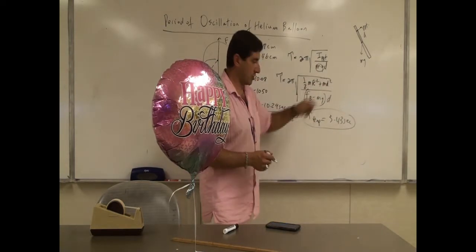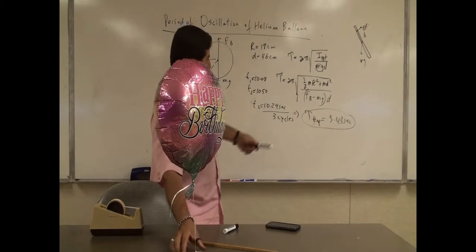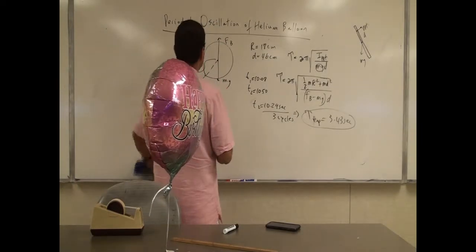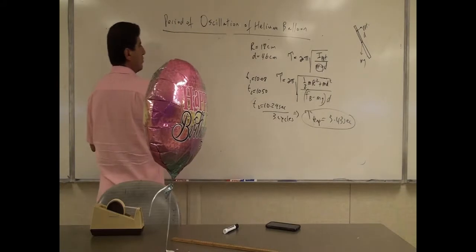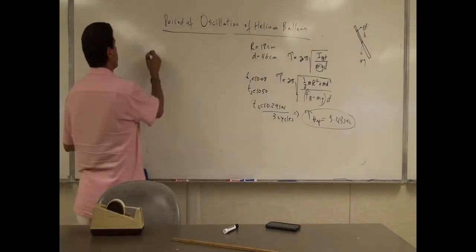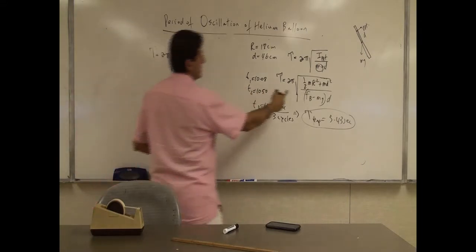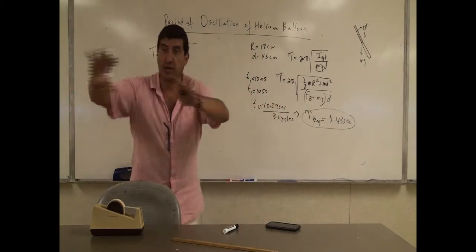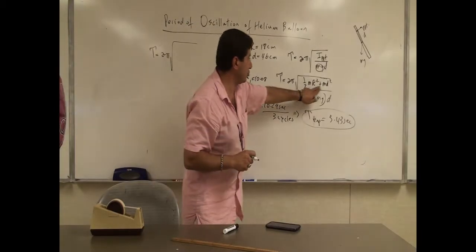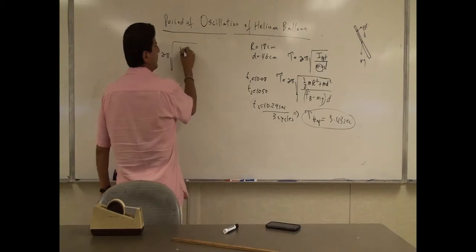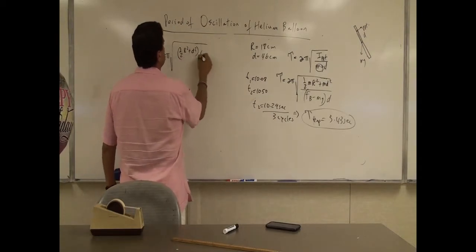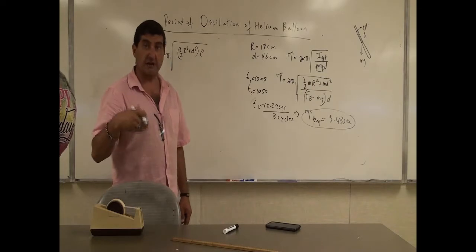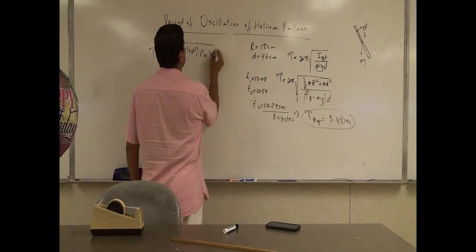Now let's develop this further. Do I have to calculate the actual mass of the helium balloon? Let's use the equation for buoyant force. We can factor out M — the mass of the helium balloon, which includes the helium gas plus the mass of the balloon material. So we have one-half R squared plus D squared. The mass of the helium balloon equals the density of the balloon times the volume of the balloon.